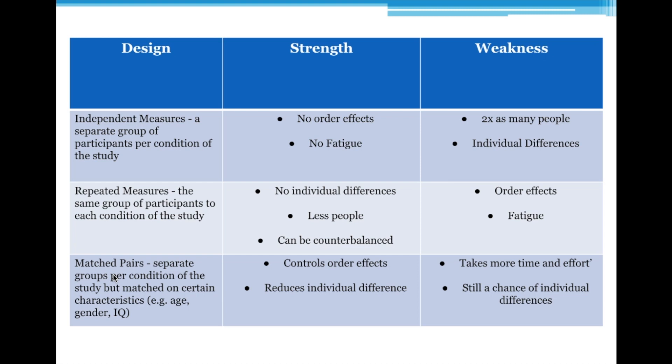So now we've established that, we need to know what these things are. An independent measures design is where you have a separate group of participants per condition of the study. That's quite important. Quite often I see this referred to as having two separate groups — well, that's only true if there are two levels of the IV, which quite often there are, but sometimes there are more. So you need to know that it's a separate group per level of the IV.